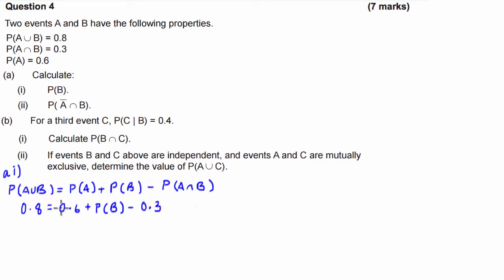Great, so 0.6 take 0.3 is 0.3. We'll take that over to the other side and we'll have 0.8 take 0.3 is 0.5 is equal to the probability of B. Great, so that's our answer for part A, number 1.